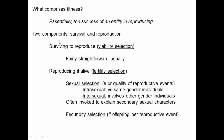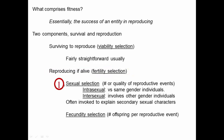The other component of fitness is, if an individual does survive to the point at which it could reproduce, to what degree does it actually reproduce? We term this fertility selection. Fertility selection has two components: first, sexual selection, which is selection based on either the number or the quality of reproductive events — how often does the individual actually reproduce? And then fecundity selection, which is when the individual reproduces, how many offspring does it have per reproductive event?